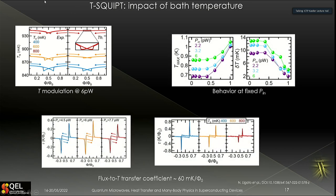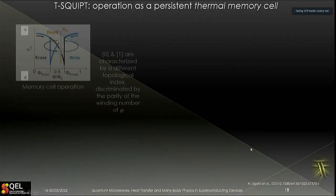Looking at the impact of the base temperature by increasing it up to 800 millikelvin, the hysteresis is reduced and the swing is also reduced. The swing reduction is due to increased electron-phonon coupling in the normal-metal electrode. The width of the butterfly is reduced because increasing temperature reduces the proximity gap, increasing the coherence length and pushing the junction towards the less hysteretic regime. The delta T for base temperatures approaching 1 K is still around 20% of the maximum, so the effect remains observable up to 1 K.